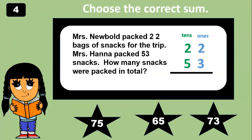Mrs. New Bowl packed 22 bags of snacks for the trip. Mrs. Hannah packed 53 snacks. How many snacks were packed in total? Don't forget those steps. Step one, add the ones. Step two, add the tens. What is the sum? 75. Two plus three equals five. Two plus five equals seven. So the sum is 75.